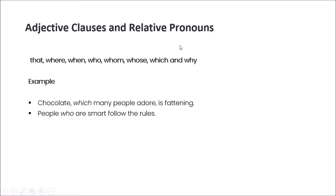Adjective clauses begin with a relative pronoun, which connects them to the word they describe. Relative pronouns include the words: that, where, when, who, whom, whose, which, and why. Once you remember the relative pronouns, it's easy to pick out an adjective clause in a sentence.